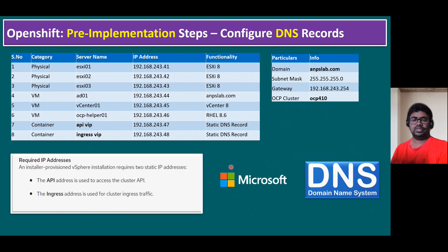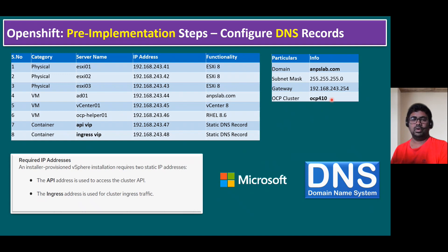With DNS, we can use either a Linux flavor or a Windows flavor. Currently we are using Microsoft DNS server running on Windows Server 2022. Our domain name is anpslab.com, and we need to decide our cluster name — I'm going to use OCP410. You can change it to any different name as well. Before creating records 7 and 8 (the two VIP records), we'll first verify that records 1 through 6 are already created.